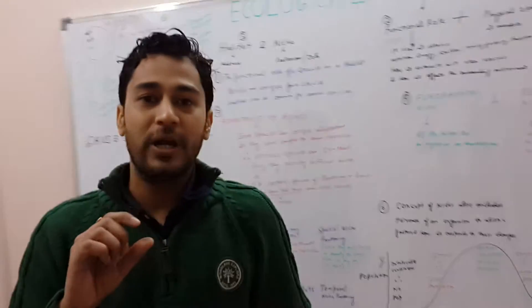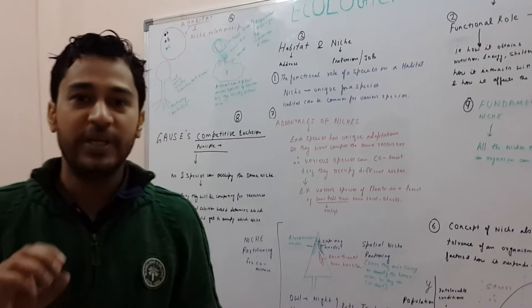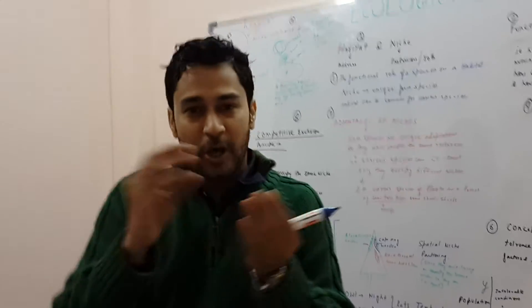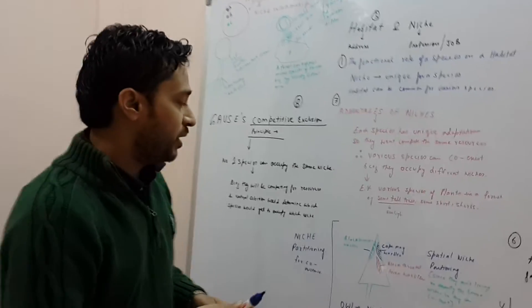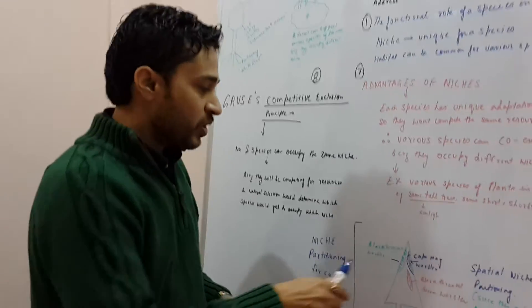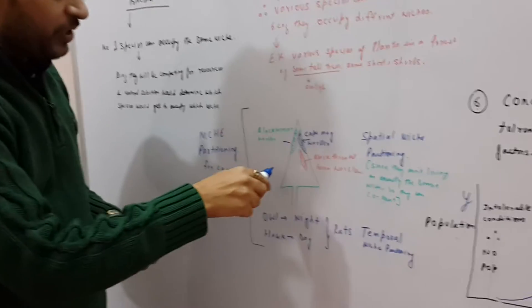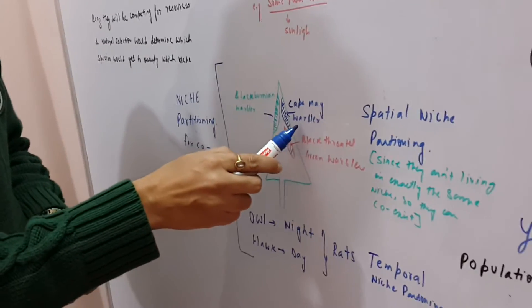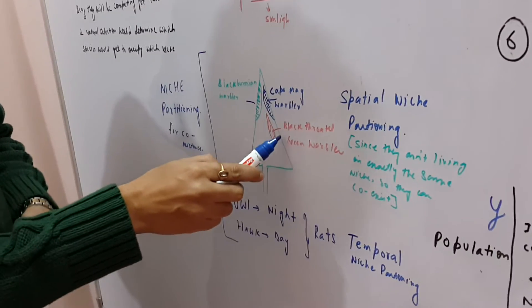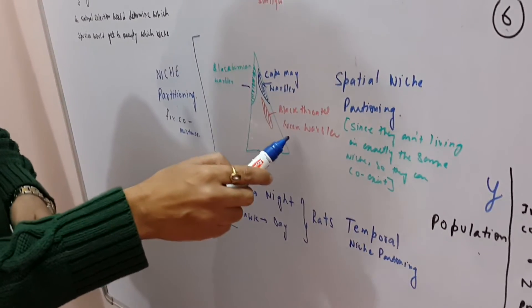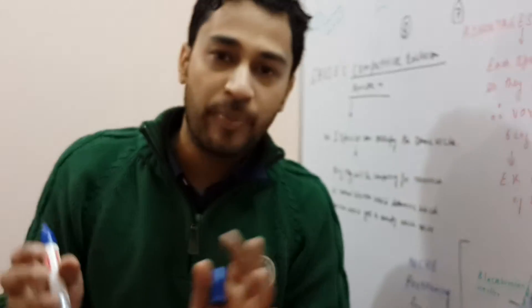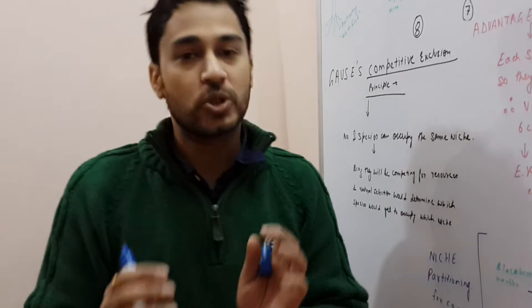Now there is also a concept called niche partitioning, which means that two species can occupy different niches so that they can easily survive. For example, there are birds called warblers. They occupy different parts of a tree. Like the Blackburnian warbler occupies this part, Cape May warbler occupies this part, and the black-throated green warbler occupies this part. Now since they are not occupying exactly the same niche, so they can coexist.